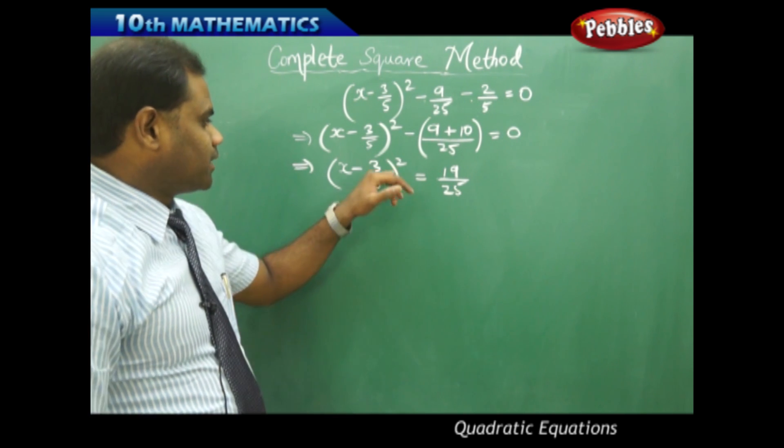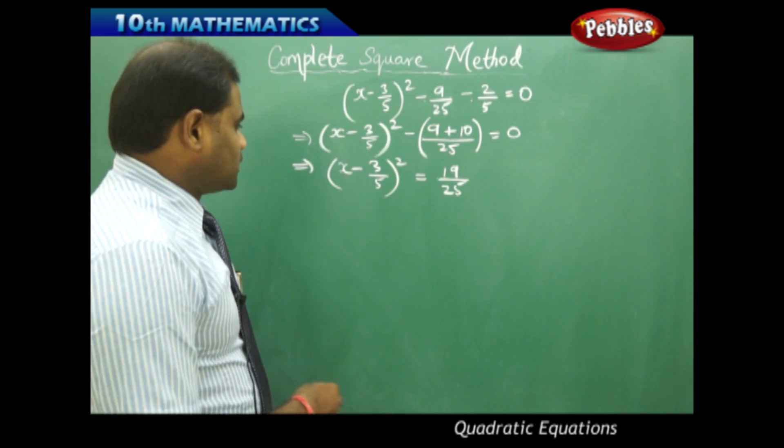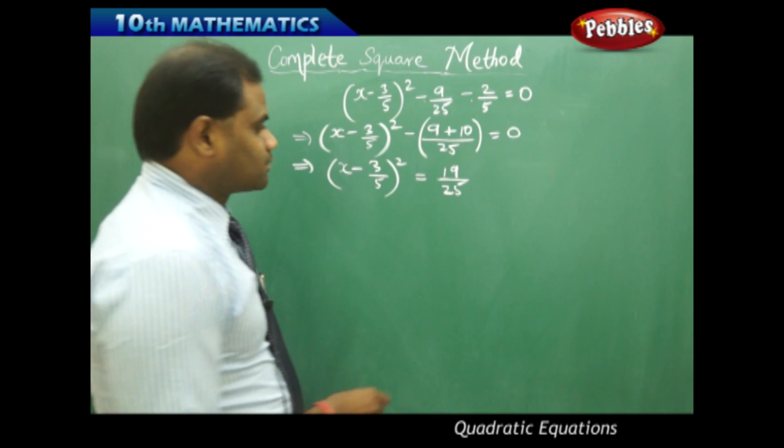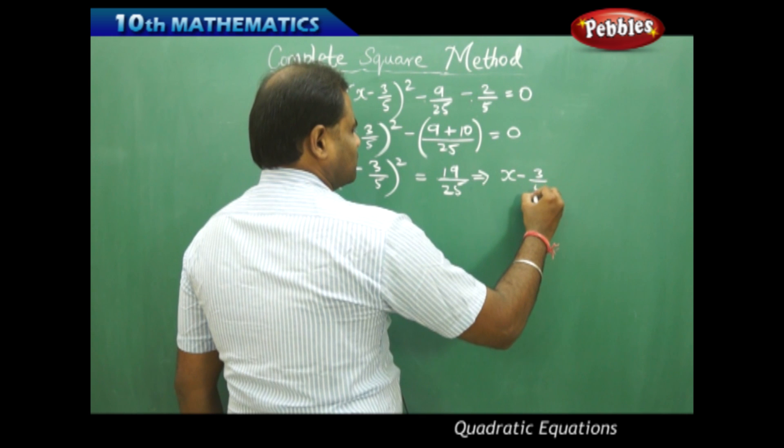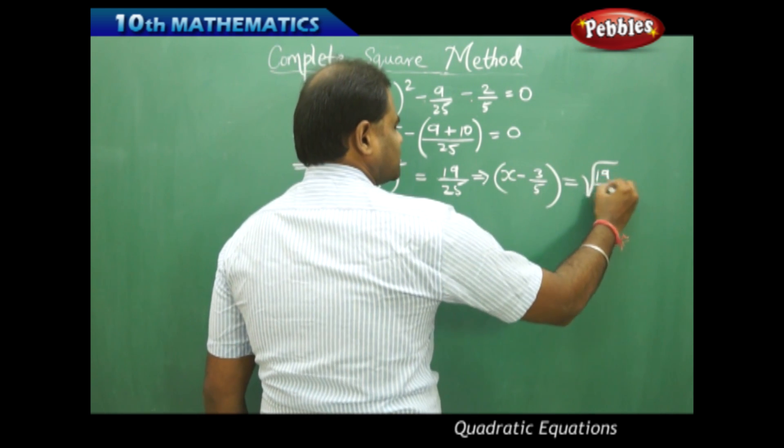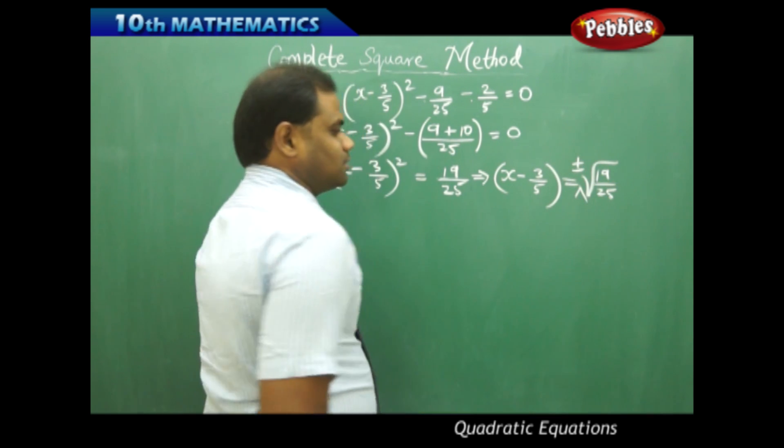This is further simplified by taking square to the right side which reduces as a root. So when (x - 3/5)² equals 19/25, then that implies x - 3/5 is equal to √(19/25), of course I get plus or minus out here.